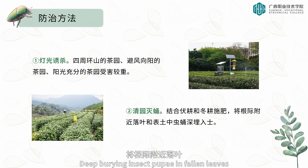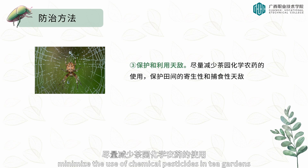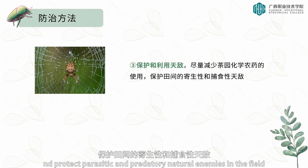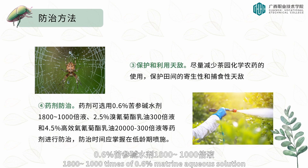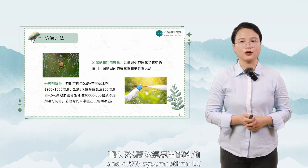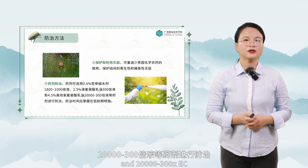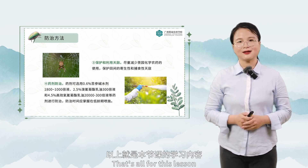Three: protect and utilize natural enemies — minimize the use of chemical pesticides in tea gardens to protect parasitic and predatory natural enemies in the field. Four: chemical control — recommended pesticides include 0.6% matrine aqueous solution at 800–1000 times dilution, 2.5% deltamethrin EC at 3000 times, 4.5% cypermethrin EC, and 20,000–30,000 times EC formulations. Spray pesticides at the early stage of infestation.